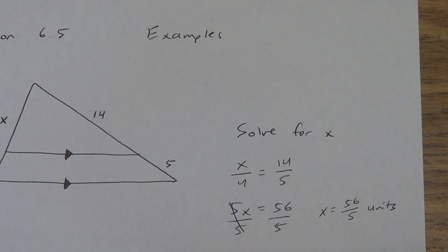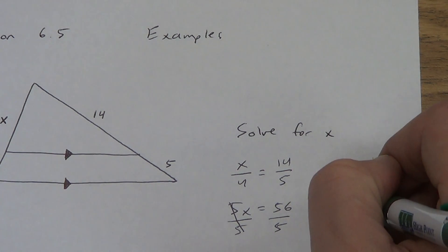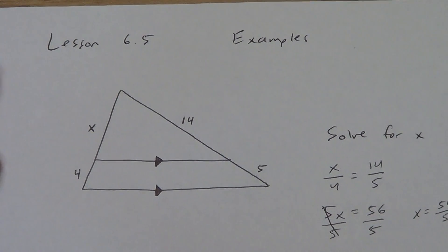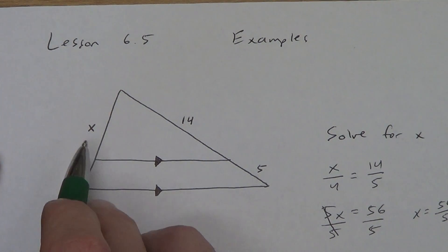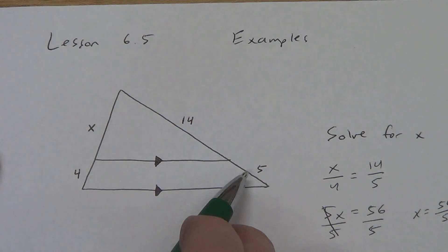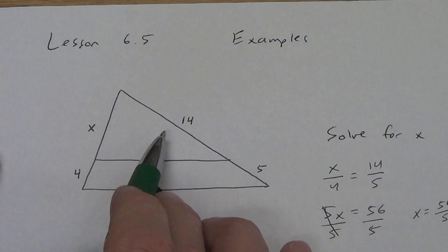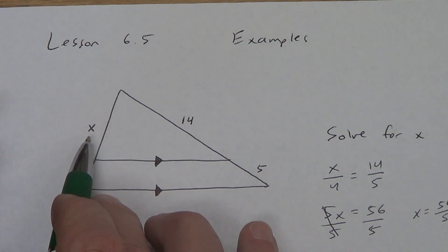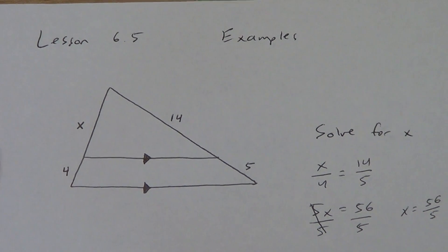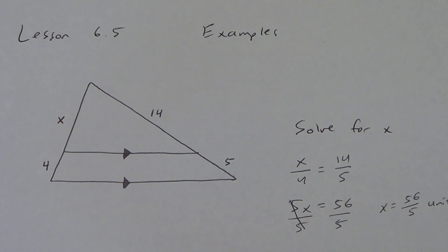Divide both sides by 5. Can I reduce? No. So x equals 56 over 5 units. Now, if you really want to go to a decimal to check your answer, that's fine. It would be 11.2. And you can do that, see if it makes sense. 11.2 is definitely bigger than 4. That makes sense. 14 is bigger than 5. But I really don't want you to go rounding off decimals all the time to give me your answers.